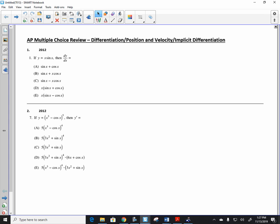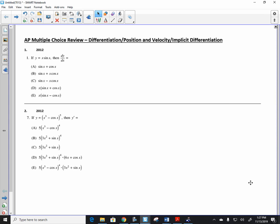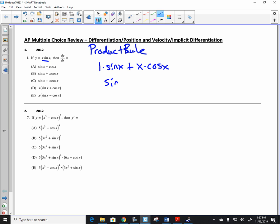The first one, you should notice that you should have used the product rule. I hope that you use the product rule. Hopefully everybody got this one right. So product rule. And so you got the derivative of x is 1 times sine of x plus x times the derivative of sine of x is cosine of x. So simply sine of x plus x cosine of x. So yes, the answer is in fact letter b. Hopefully you all got that one right.